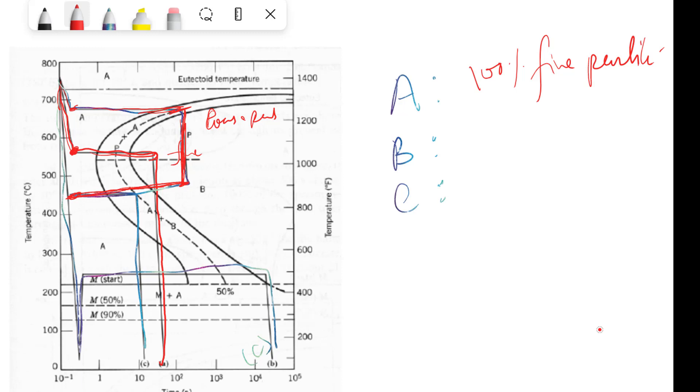This is the same temperature B and this line. We are giving this time such that it is getting transformed up to 50 percent of bainite because it is below the nose.